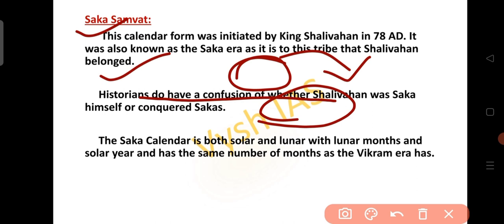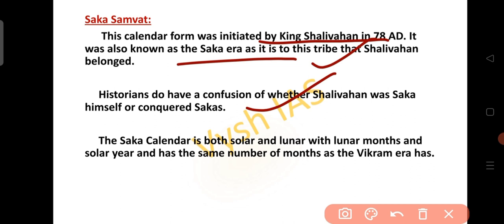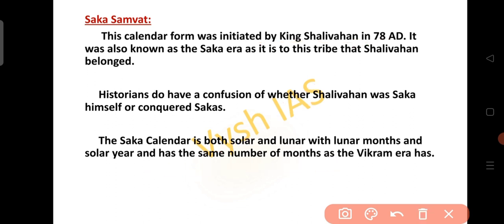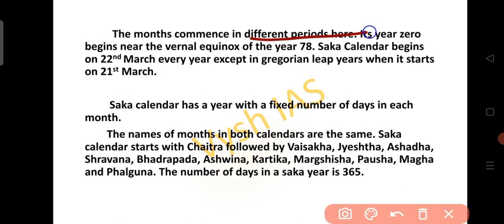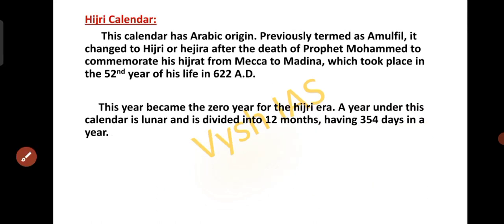Shaka Sambat is also a lunisolar system. This calendar was initiated by King Shalivahan in 78 AD and is also known as the Shaka era, after the tribe that Shalivahan belonged to. Historians are uncertain whether Shalivahan was a Shaka himself or conquered the Shakas. The Shaka calendar is both solar and lunar, with lunar months and solar years, and has the same number of months as the Vikram era. The Shaka calendar has a fixed number of days in each month, the names of months in both calendars are the same. It starts with Chaitra followed by Vaishakha, and the number of days in the Shaka year is 365 days.